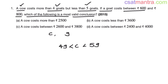It is given that a goat costs between 600 and 800 rupees. To find the minimum cost of cow, we substitute the minimum cost of goat, which is 600. To find the maximum cost of cow, we substitute the maximum cost of goat, which is 800.